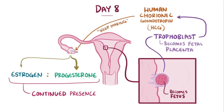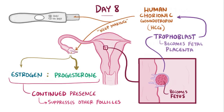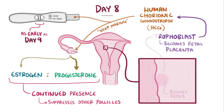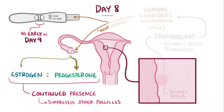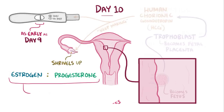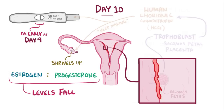The continued presence of estrogen and progesterone suppresses other ovarian follicles from maturing. HCG is also the hormone that most pregnancy tests are able to detect, causing the positive sign to form, which can happen as early as day nine. Without HCG levels shooting up on day eight, the corpus luteum would start to shrivel up by day ten, and estrogen and progesterone levels would fall, causing the lining of the endometrium to slough off, resulting in a period or menses.